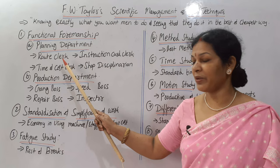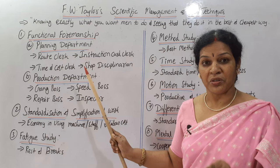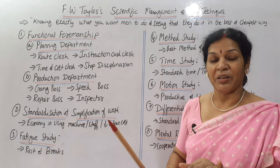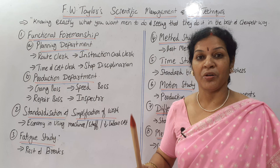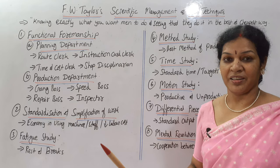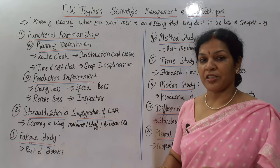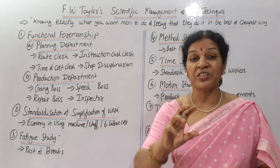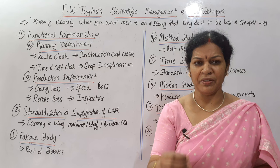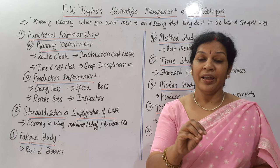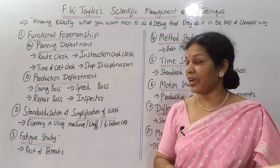The instruction card clerk gives guidance and shows the route — after the route work is designed, he gives clarification, ideas, and methodologies: what workers have to do and what they are not supposed to do. The third foreman is the time and cost clerk. He decides how much time is required for each and every work in each and every department, and what is the cost being spent for that particular work. All the time and cost calculations are done by the time and cost clerk.